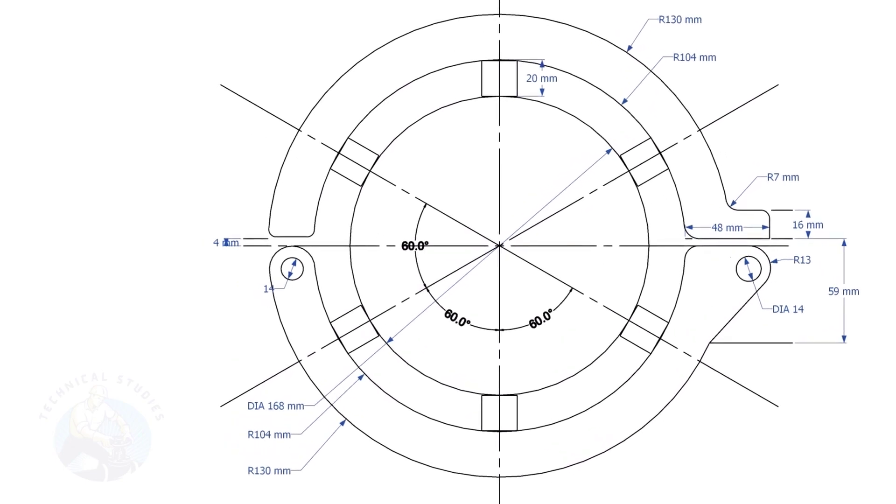This layout is for a 6-inch diameter pipe clamp. Draw the center lines and draw a circle of diameter 168 millimeters, that is the OD of the 6-inch pipe.